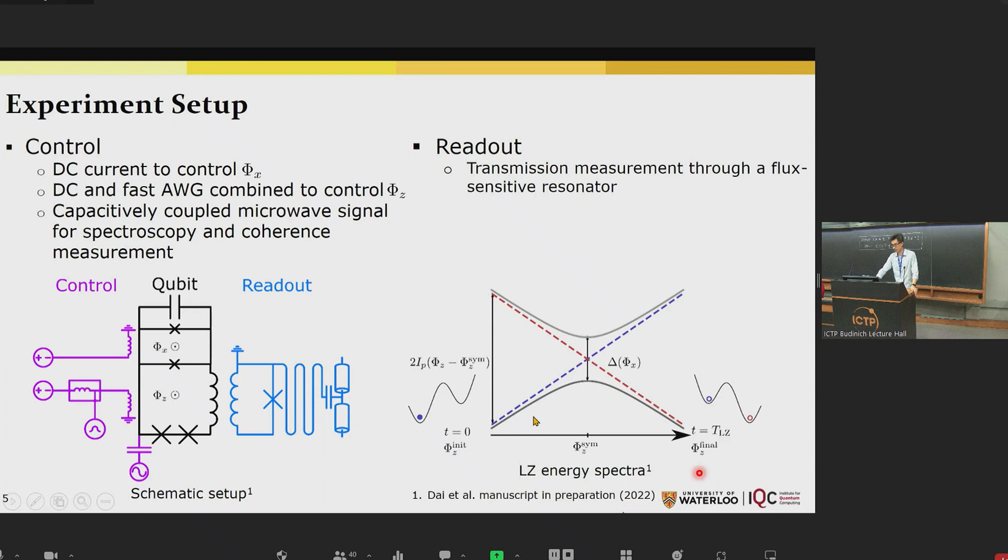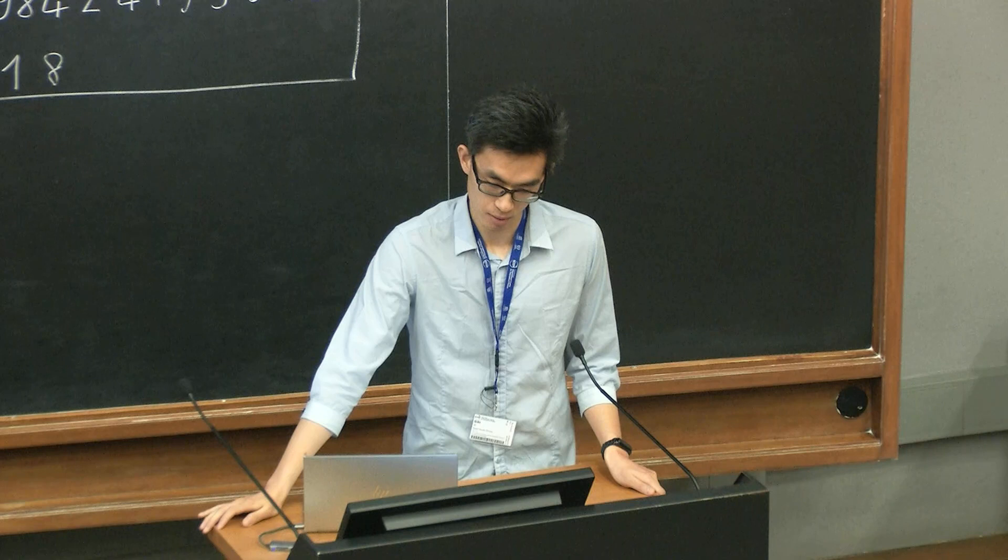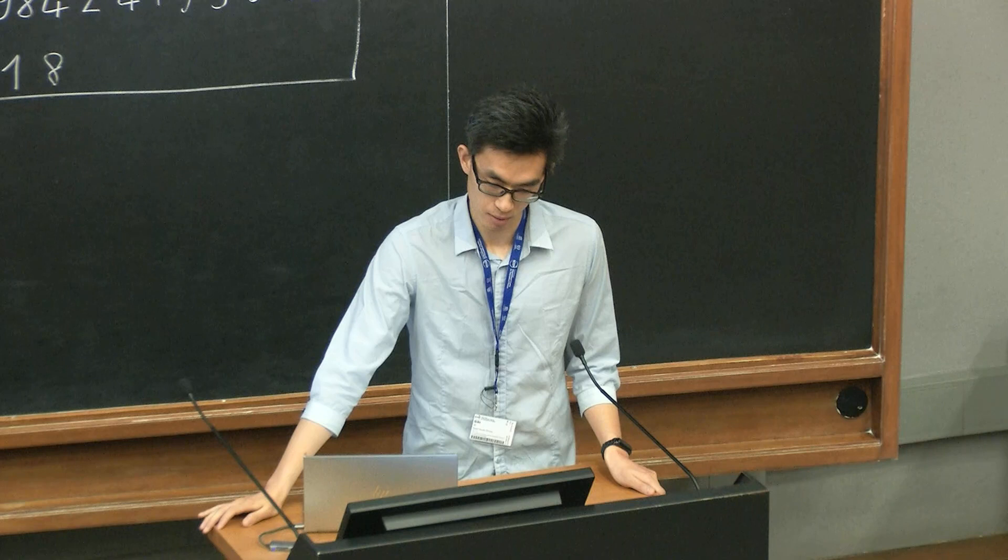The measurement protocol is pretty simple. We prepare the qubit ground state in the far left of the symmetry point at time zero, and then we linearly sweep phi-z from phi-z initial to phi-z final with time T_LZ, and then we just measure the state populations in the end.